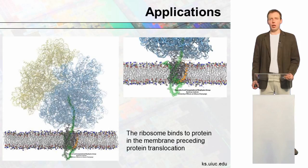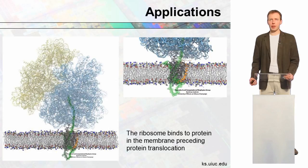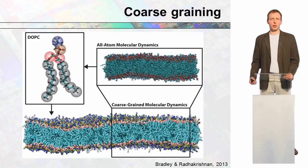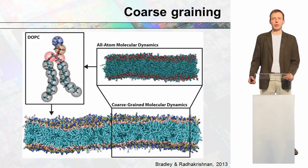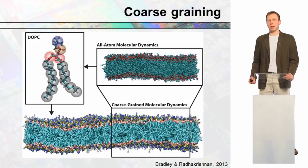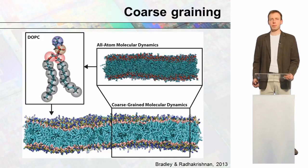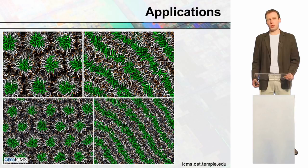In more biological approaches, there are studies of protein interactions with certain membranes. There is also the very important concept of coarse graining, with which we can perform calculations for membranes and study much larger systems than possible in the classical atomistic approach.